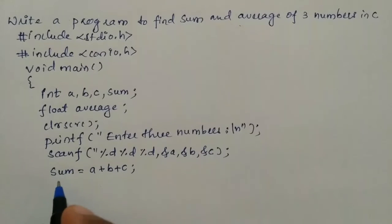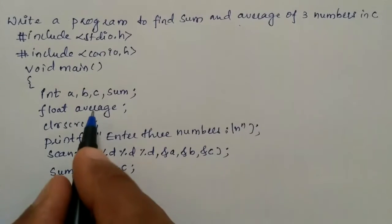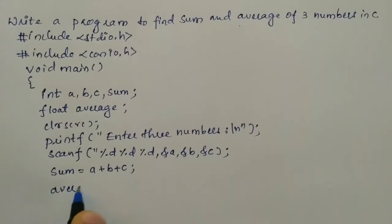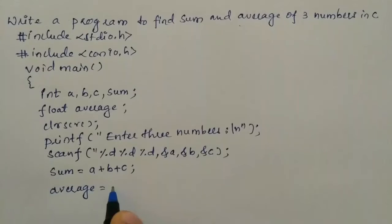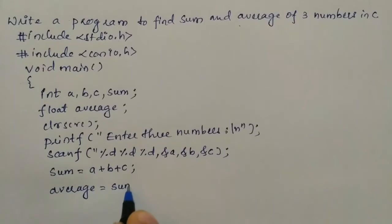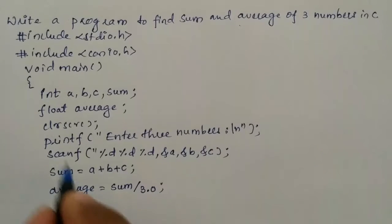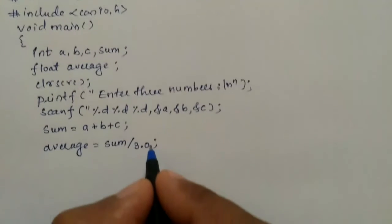And then I am going to find the average. Average can be calculated as sum divided by number of variables. Here we have got three variables, we will write 3.0 because average is floating type of data, hence we have to write 3.0 over here.